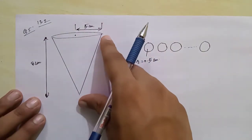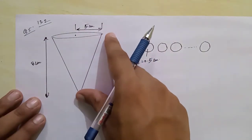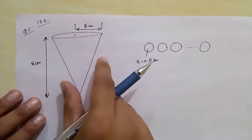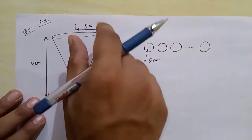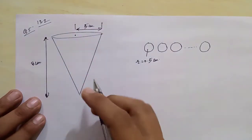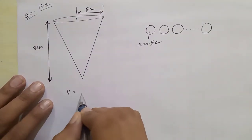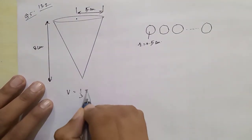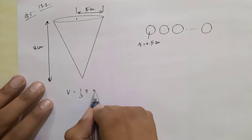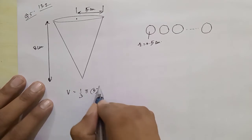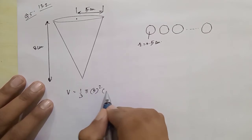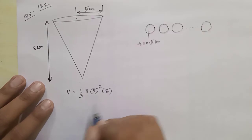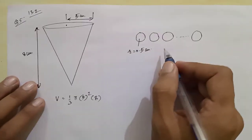The vessel is an inverted cone filled with water. Its height is 8 cm and its radius is 5 cm. First, we find its volume. Volume of cone is 1/3 π r² h.